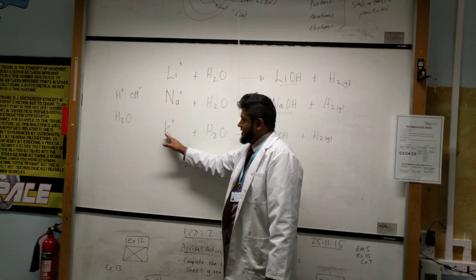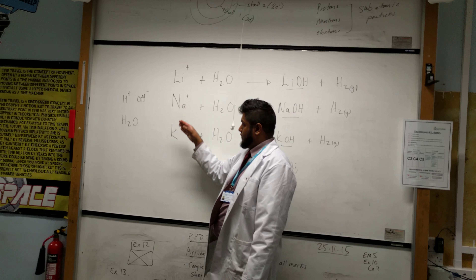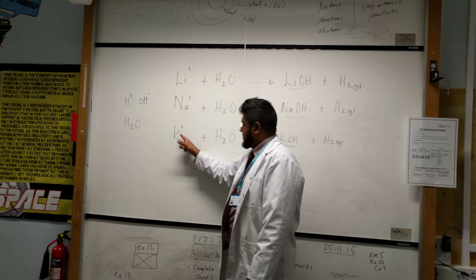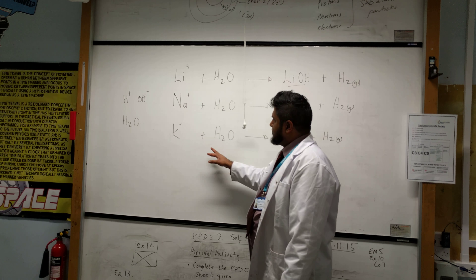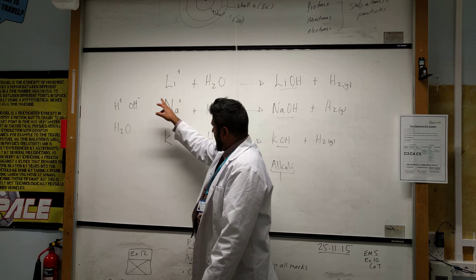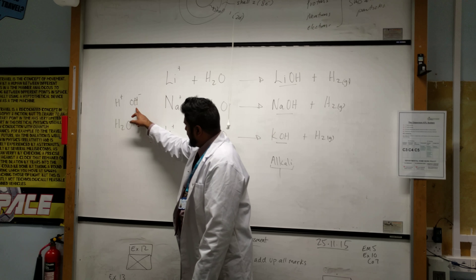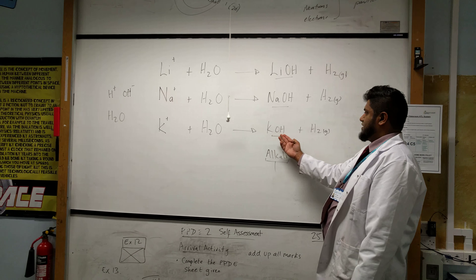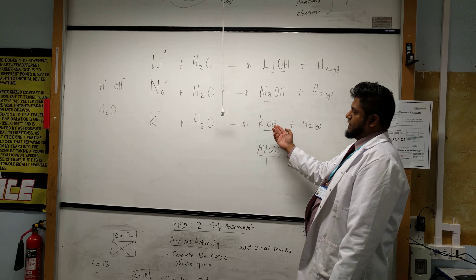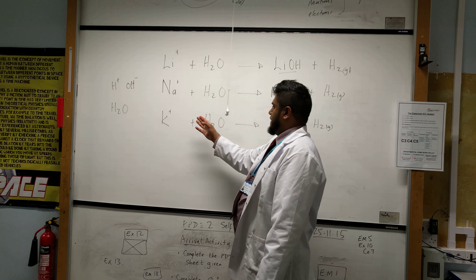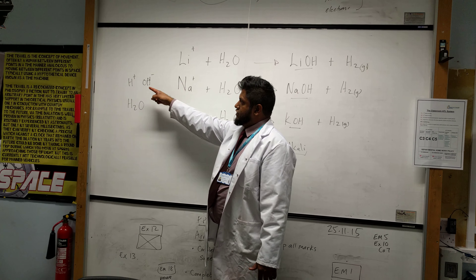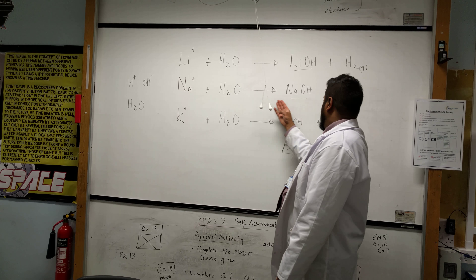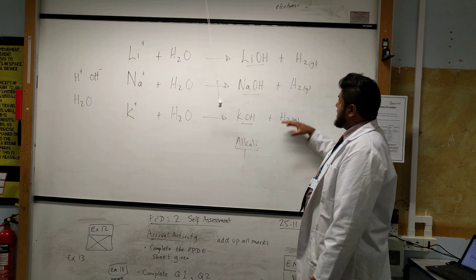Again, potassium — which is further down the same group — reacts with water: potassium combines with the hydroxide found in water to produce potassium hydroxide, and then the hydrogen ions that are left over form hydrogen gas.